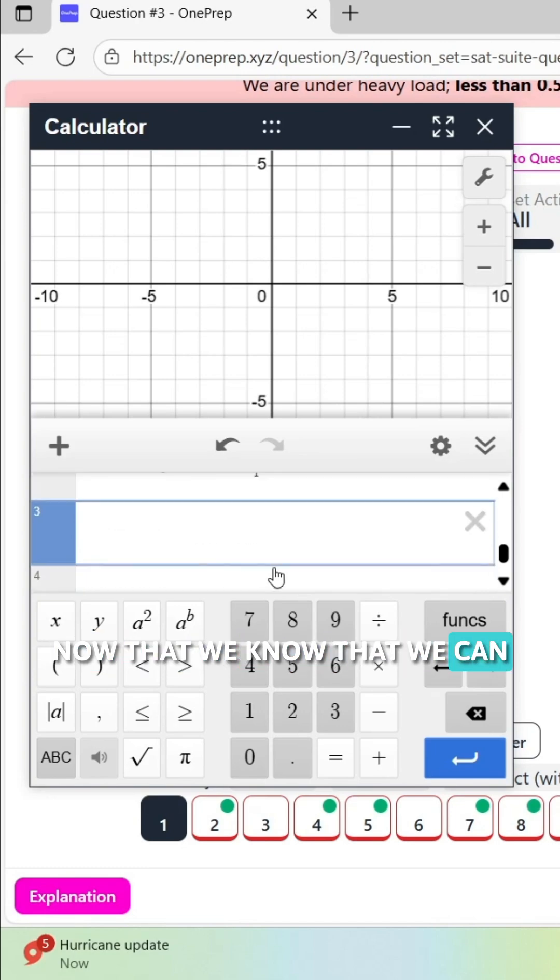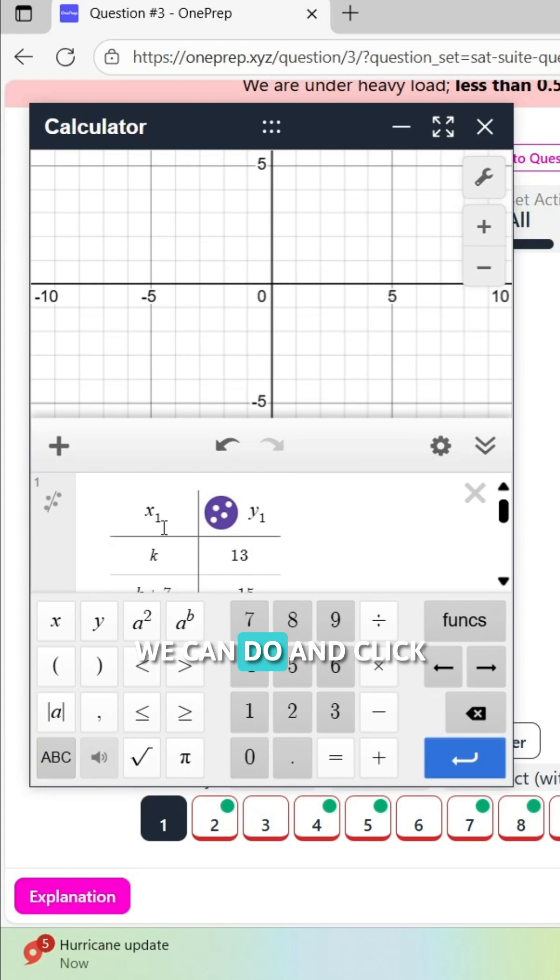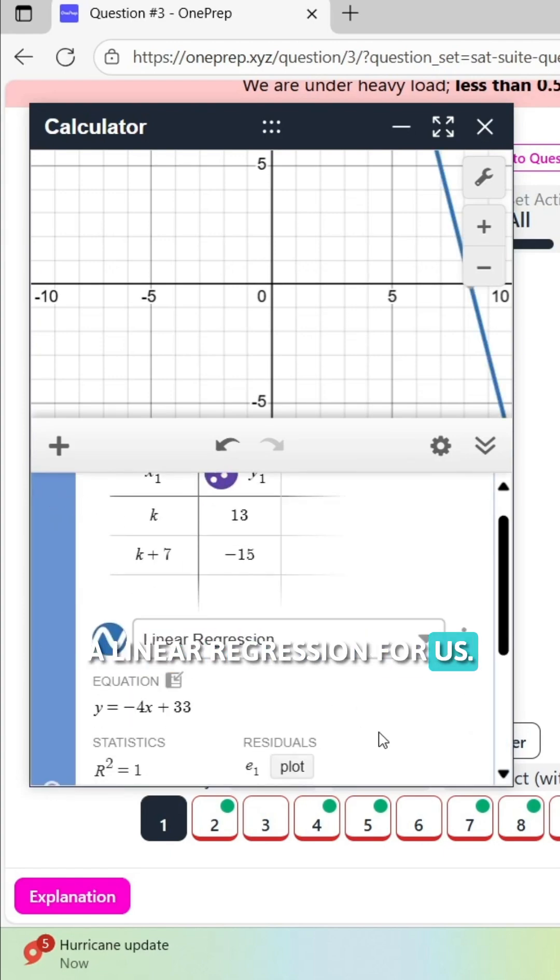Now that we know that, we can just plug in 5 in Desmos. And since we have x equals 5 in Desmos, what we can do is click add regression, and this will create a linear regression for us.